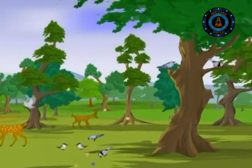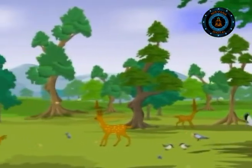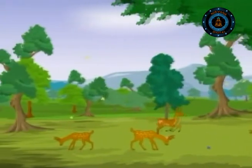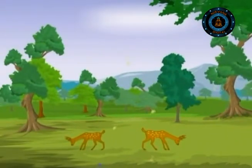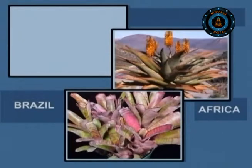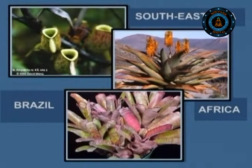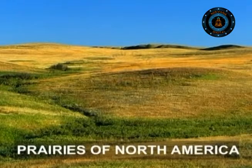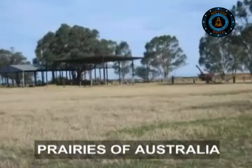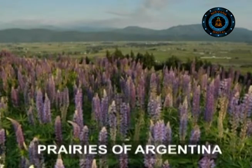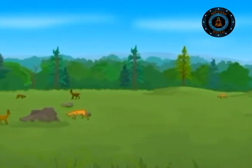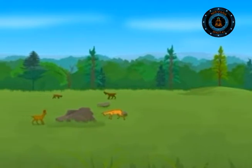Each biome has its distinctive climate and habitat, but sometimes similar biomes occur in different places. For instance, Brazil, Africa and South East Asia have plants and animals with similar habitats. While the prairies of North America, China, Australia and Argentina too have similar biomes, although the plants and animals that inhabit them are different, they live in similar ways.